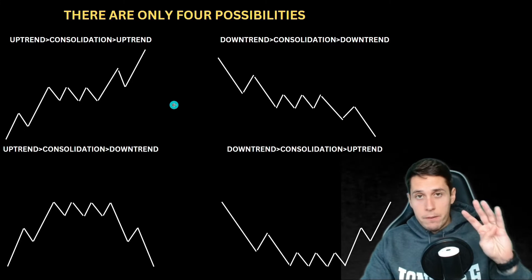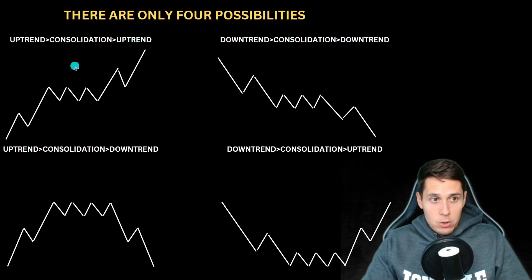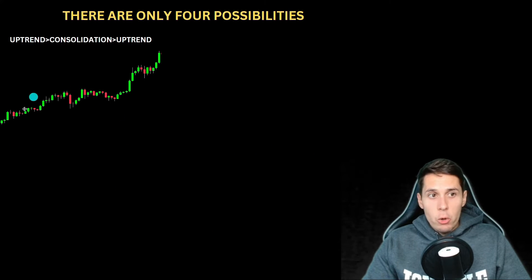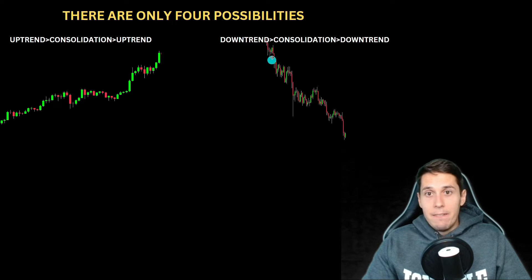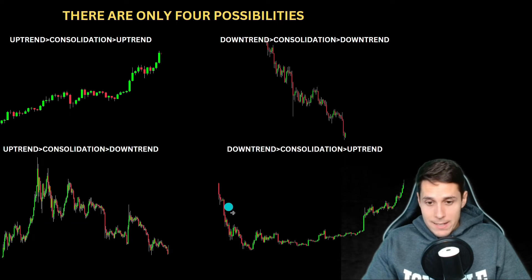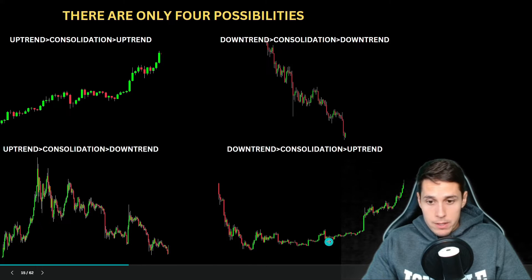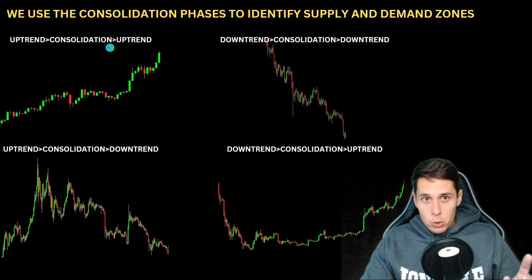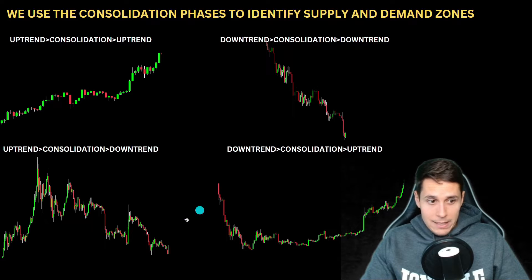The market always goes from one phase to another, and that's not only about crypto — it's about any market. There are four different possibilities: uptrend → consolidation → uptrend; downtrend → consolidation → downtrend; uptrend → consolidation → downtrend; or downtrend → consolidation → uptrend. On the chart, you can see an uptrend, then consolidation going sideways, then another uptrend; a downtrend, consolidation, downtrend; an uptrend, consolidation forming a descending triangle, then a downtrend; and the opposite — an ascending triangle — then an uptrend. These are the only four possibilities. It's these consolidation phases that we use to identify supply and demand zones.